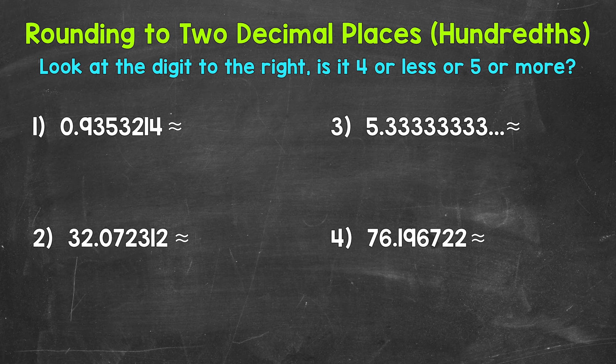Let's jump into number one, where we have a fairly long decimal. We need to round to two decimal places. In other words, we are going to cut this decimal off after two decimal places, the hundredths place. We do this by taking a look at the digit in the hundredths place, or whatever other place we want to round to,